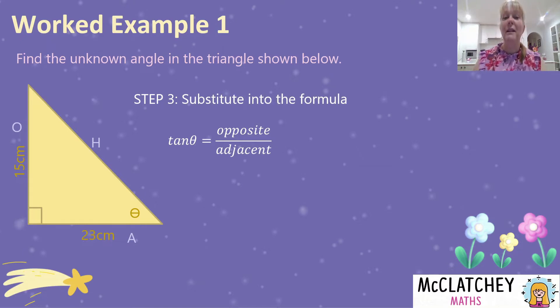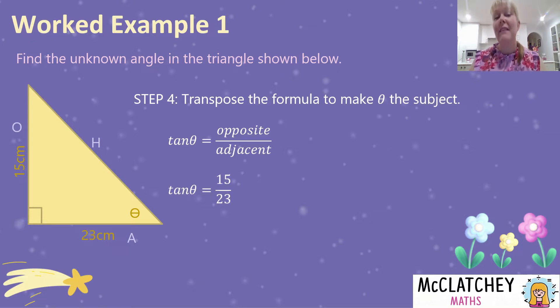TOA from SOHCAHTOA. So I write my formula, and then I'm going to substitute into the formula the information I've got: 15 over 23. Now we want to get theta all by itself and make it the subject. You might be thinking, well hang on, there's a tan with it. I've never encountered a word with an algebra before. How do I get the algebraic symbol or theta all by itself?